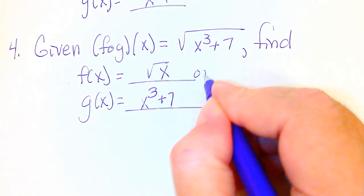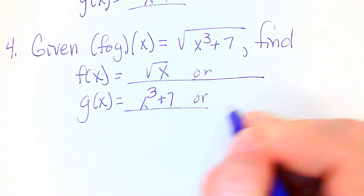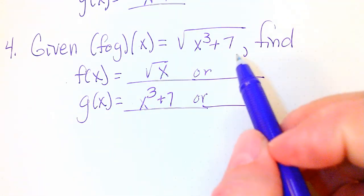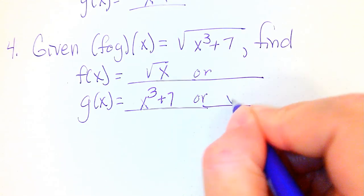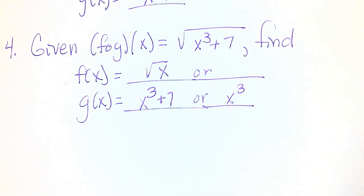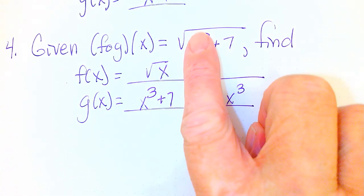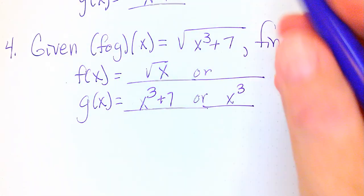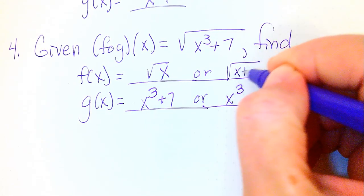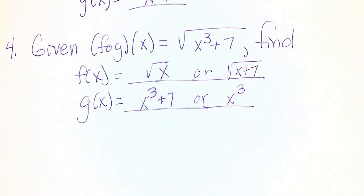However, there is another answer that would also work. So if I chose g of x as x cubed, then if I just replace that part with x, I would have square root of x plus 7 and that is also correct. So either of these works. Either of these are the correct answer. This is called function decomposition. It's breaking it down after they've already composed it together.